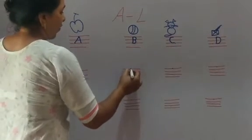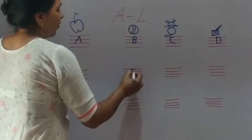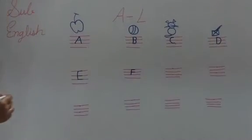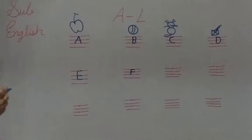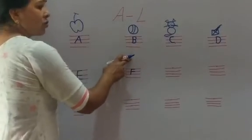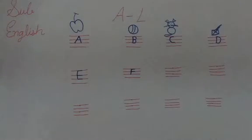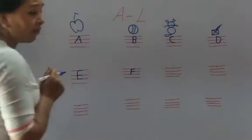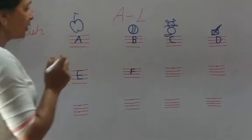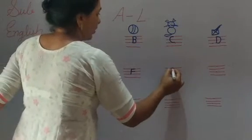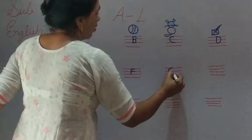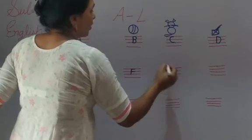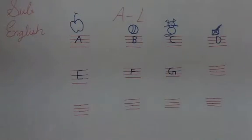Now, F. F for fish. F for fan also. You can draw any picture here. F for fish or F for fan. Good. What comes after F? It's G. G for gun. G for grapes.